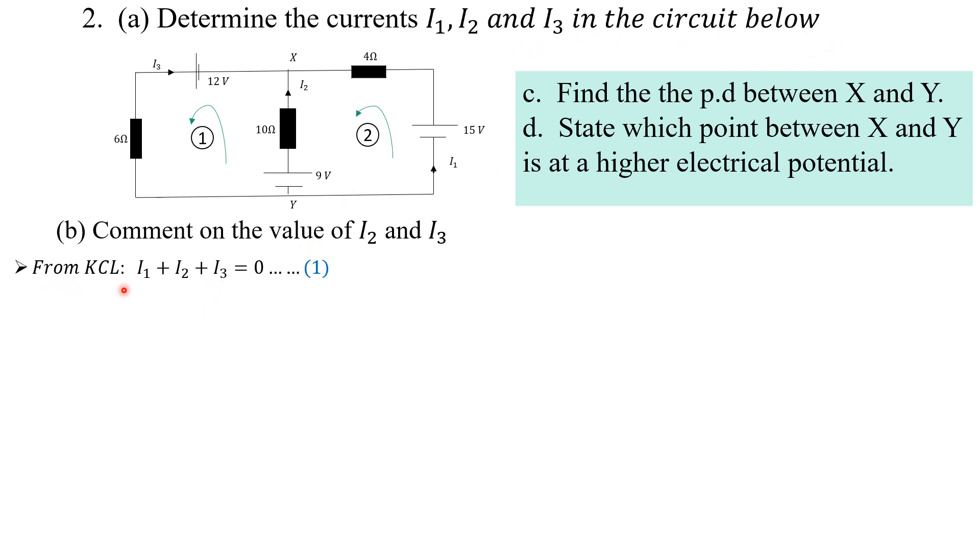From Kirchhoff's Current Law, all these currents I2, I1, all of them are entering this node, so we just sum all of them to be equal to zero since there's no current leaving the node. The sum of all the currents entering a particular node should equal all the currents leaving. That's our equation one from Kirchhoff's Current Law.